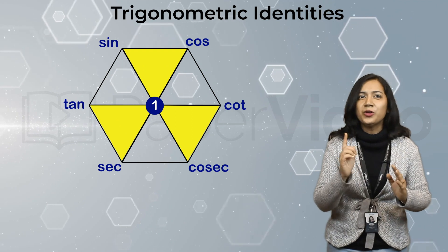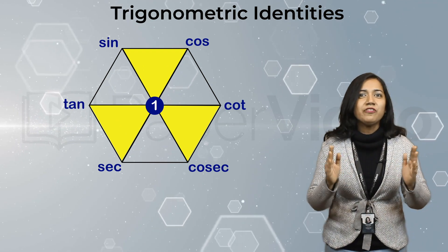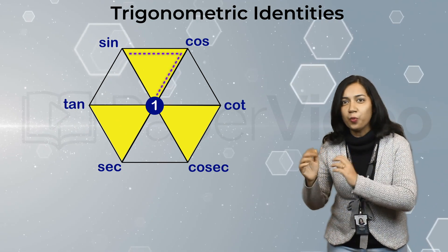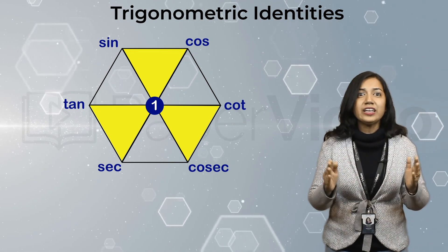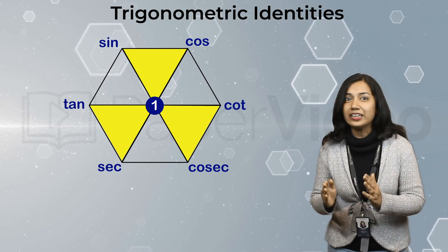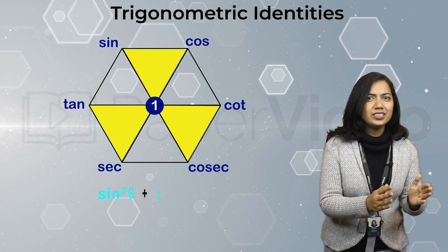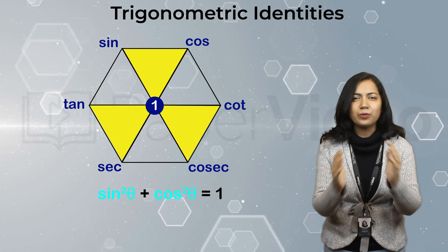From the first triangle, going in clockwise direction, we get sin, cos and 1. Squaring these three in order, we can write the first trigonometric identity as sin square theta plus cos square theta equals 1.